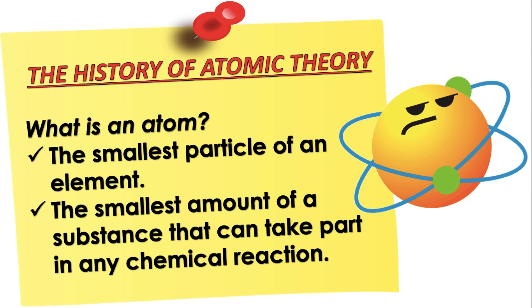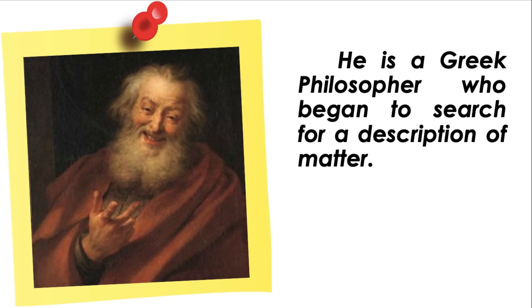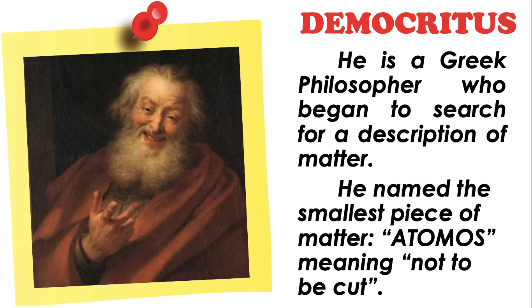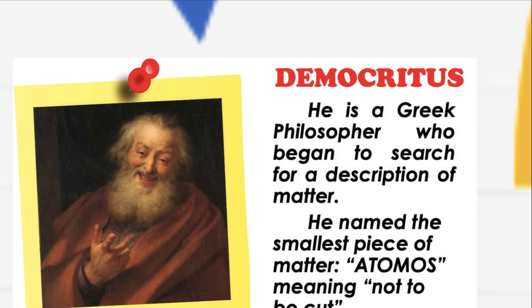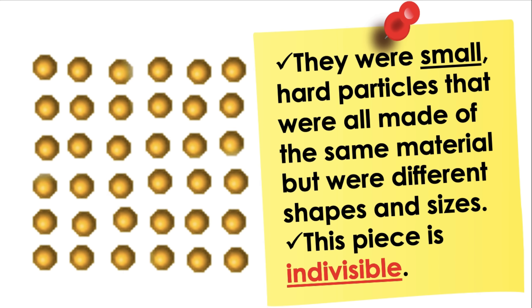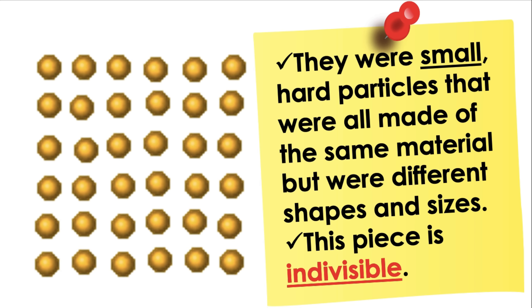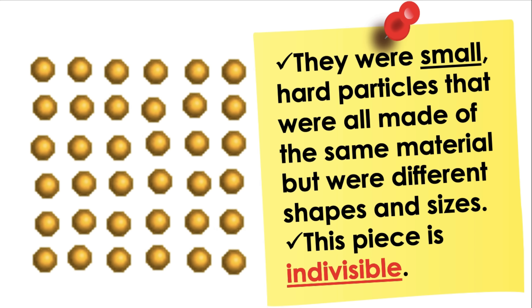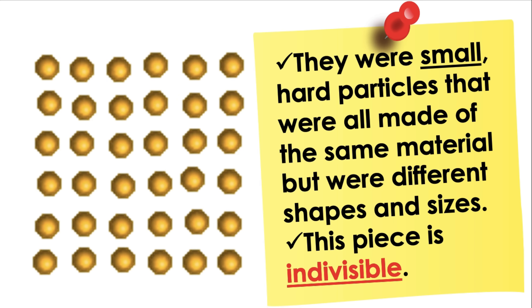History of atoms. Atom is the smallest particle of an element — the smallest amount of a substance that can take part in any chemical reaction. The first person who began to search for a description of matter is Democritus. He named the smallest piece of matter 'atomos,' meaning not to be cut. His atomic model described them as small, hard particles made of the same material but different shapes and sizes, and this piece is indivisible.